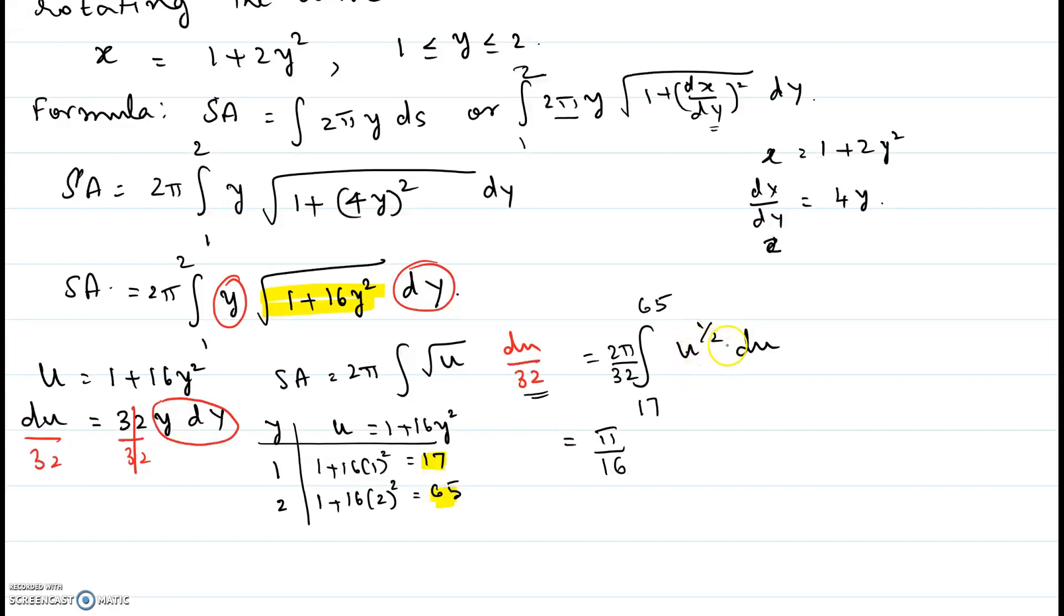If you integrate u to the one-half, it is u to the three-halves divided by three-halves, between the limits 17 and 65. So it is π over 16, flip and multiply, it is two-thirds, then 65 to the power 3/2 minus 17 to the power 3/2, or it is π over 24.